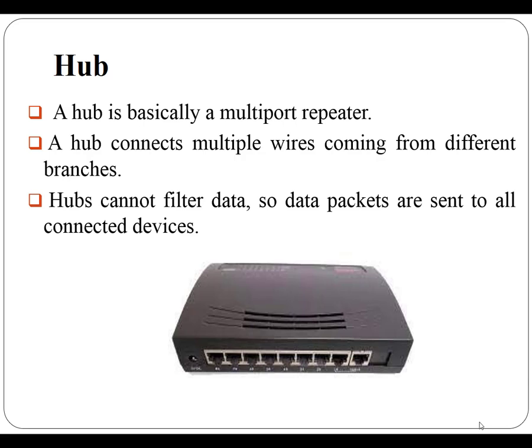Hub cannot filter data, so data packets are sent to all connected devices. In other words, collision domains of all hosts connected through a hub remain one. Also, they do not have the intelligence to find out the best path for data packets, which leads to inefficiency and wastage. There are three different types of hub: active hub, passive hub, and intelligent hub.